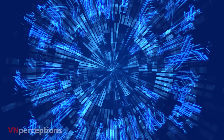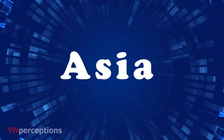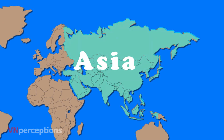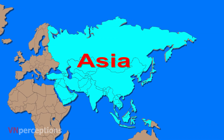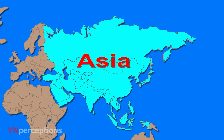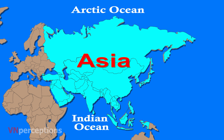In this video, we shall learn about the physical features of Asia. To begin with, Asia is bordered by oceans on three sides. To its north lies the Arctic Ocean, to the south is the Indian Ocean, and to its eastern coast it is bounded by the Pacific Ocean.